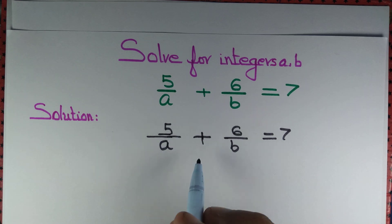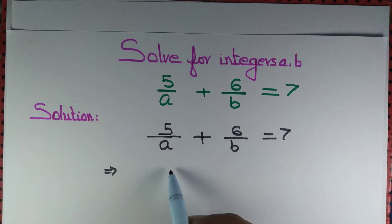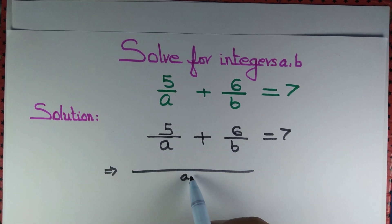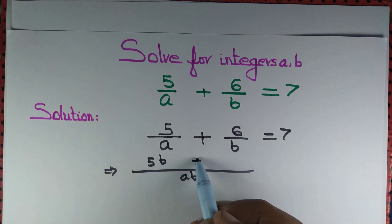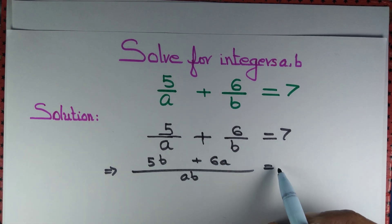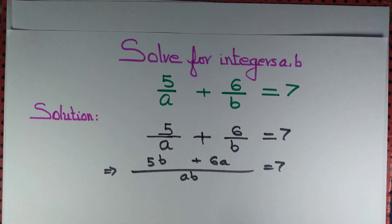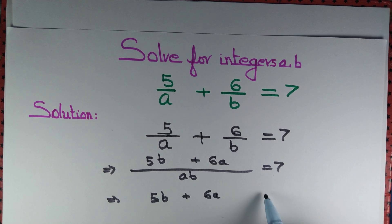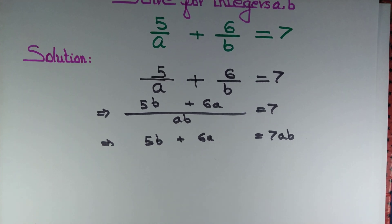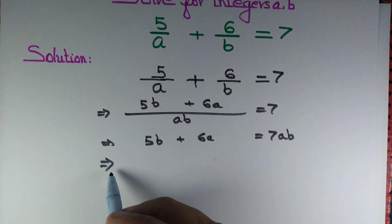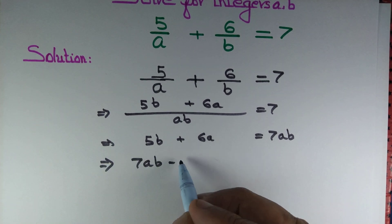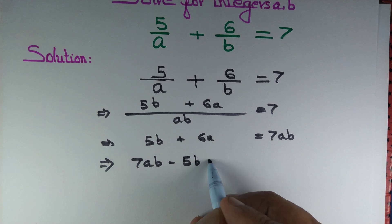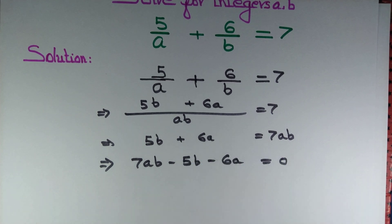First, take the LCM to simplify the given expression: (5b + 6a) / ab = 7. Cross-multiplying, we obtain 5b + 6a = 7ab. Rearranging, we write 7ab - 5b - 6a = 0.